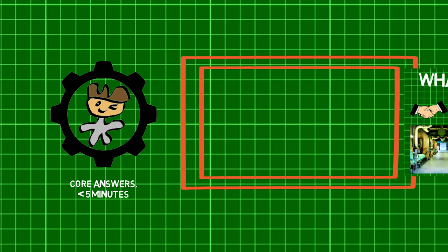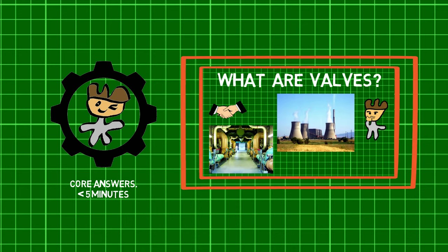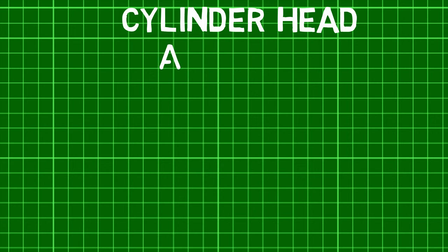Before we jump in, check out the previous part of this series to learn about what valves are. Now, there are three major components of an internal combustion engine.